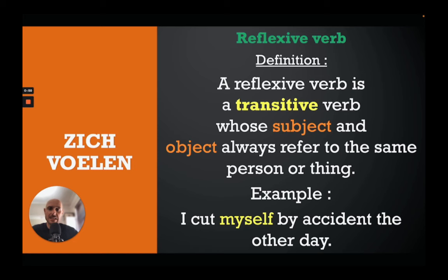The first translation of 'to feel' in Dutch is 'zich voelen.' You can see it on the left-hand side — two parts: 'zich' and 'voelen.' 'Voelen' is our verb. 'Zich' is what we call a reflexive pronoun, and 'zich voelen' is a reflexive verb. A reflexive verb is a transitive verb — meaning it has an object — whose subject and object always refer to the same person or thing. Definitions don't always make a lot of sense, so let's look at an example.